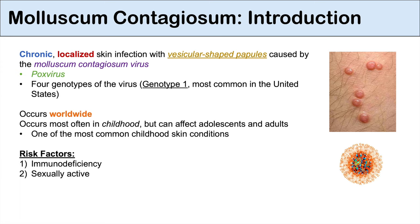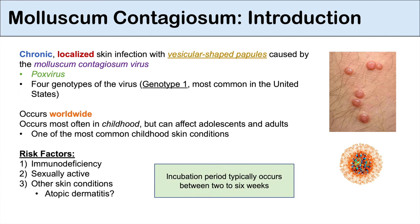Another risk factor is being sexually active. This condition can essentially act like a sexually transmitted infection, so individuals who have it can pass it along through direct contact. Another associated risk factor is having other skin conditions, and most commonly having atopic dermatitis or eczema, which seems to be associated with an increased risk for getting molluscum contagiosum.